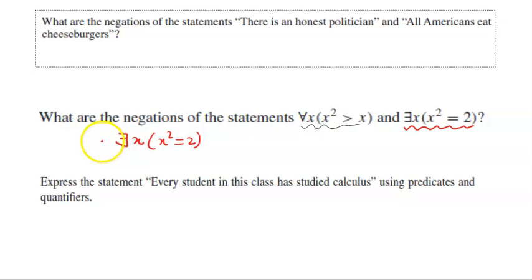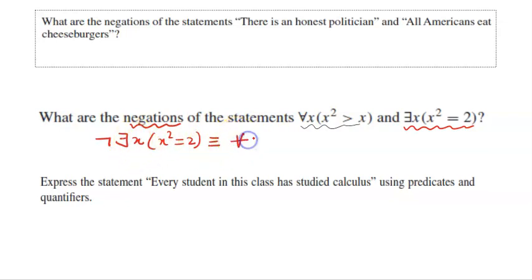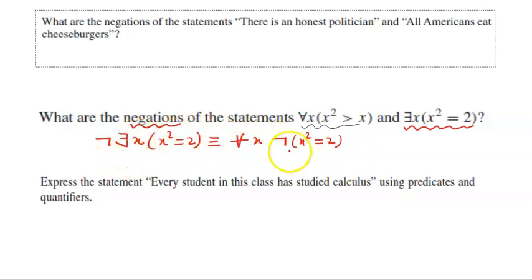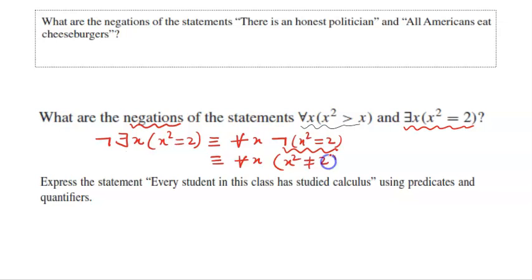I have to write the negation of this statement. If I write the negation using the laws of equivalence, I can write: for all x, negation of (x² = 2). By now you should be clear that 'there exists' becomes 'for all' and then we take the negation. So this is equivalent to: for all x, x² ≠ 2. As simple as that.